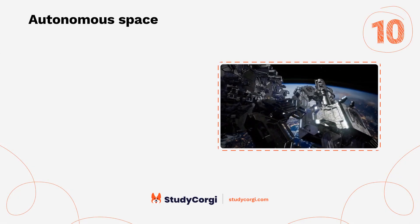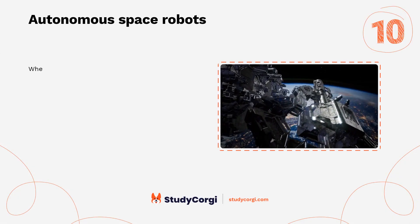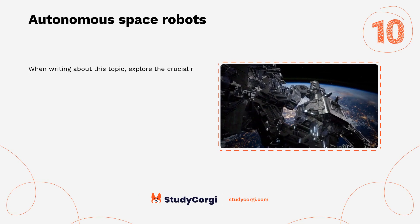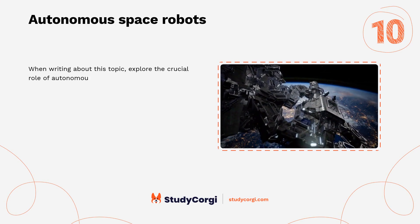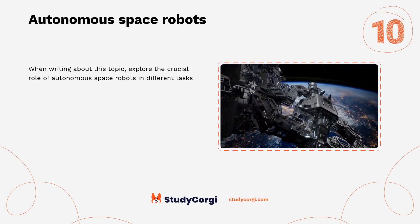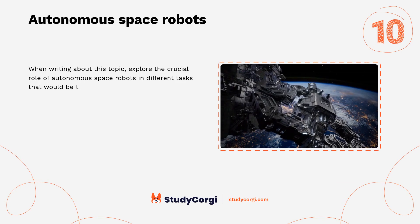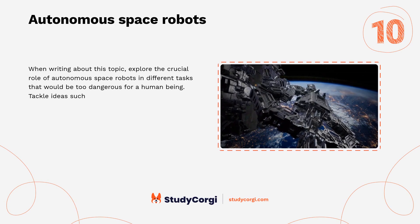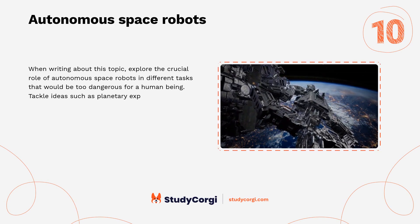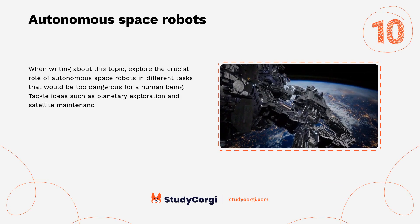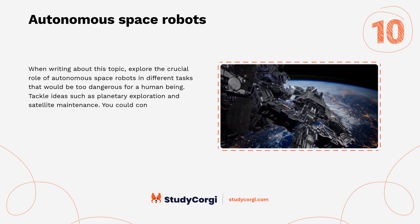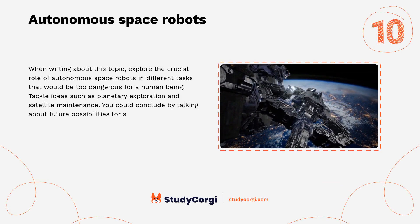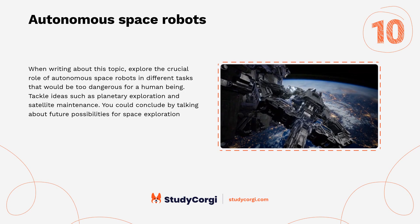Autonomous Space Robots. When writing about this topic, explore the crucial role of autonomous space robots in different tasks that would be too dangerous for a human being. Tackle ideas such as planetary exploration and satellite maintenance. You could conclude by talking about future possibilities for space exploration involving robotics.